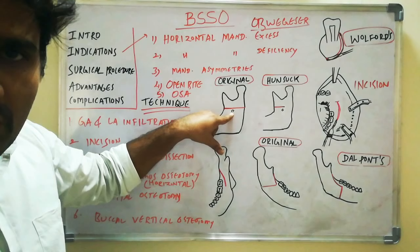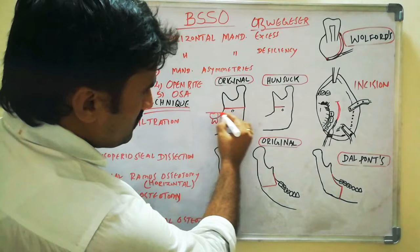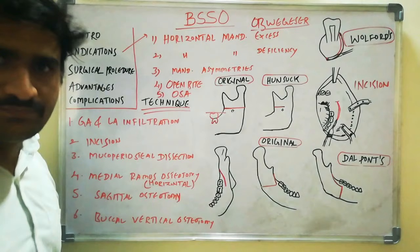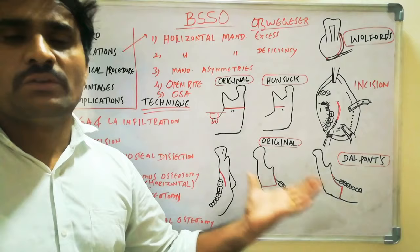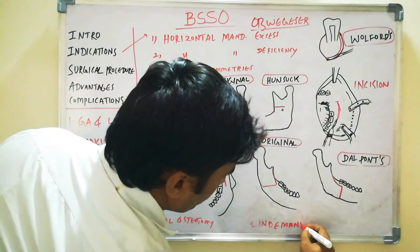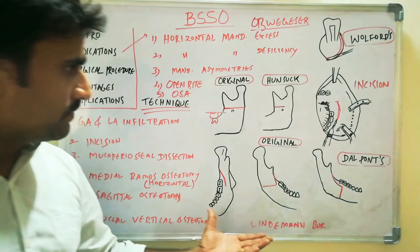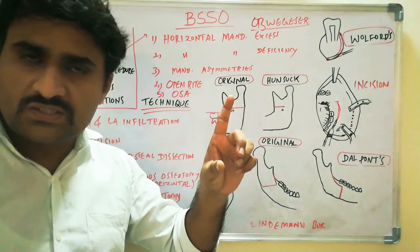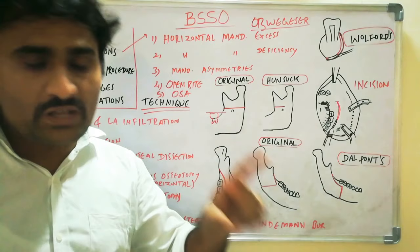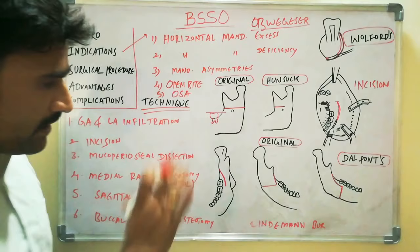The medial ramus osteotomy should be parallel to the occlusal plane. Start the cut with a long fissured Lindemann burr, or a 701 fissure surgical burr. Always make sure you completely cut through the cortical bone. Once you cut through the cortical bone and enter the medullary bone, you will feel a dip — that is the point where you stop the cut.